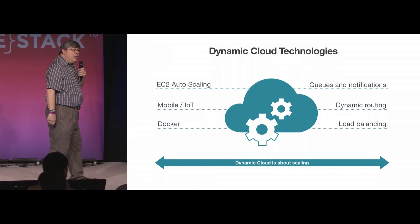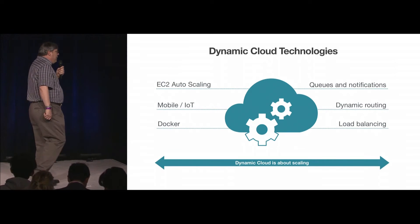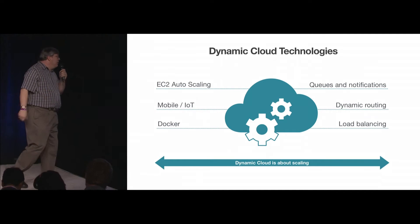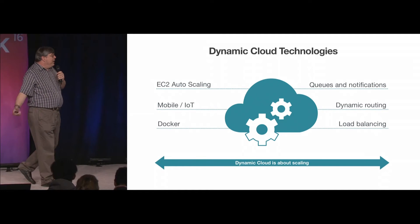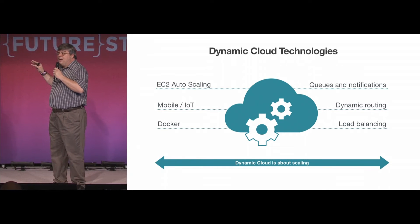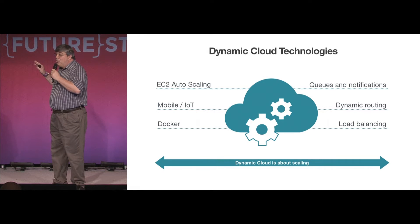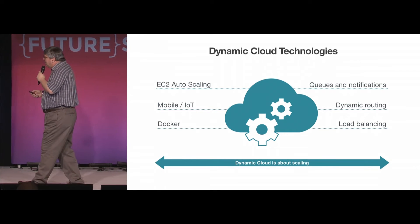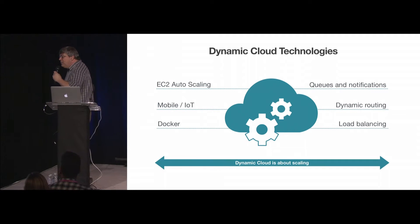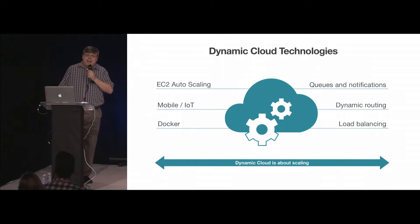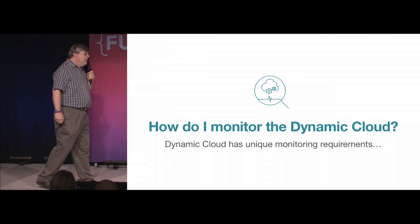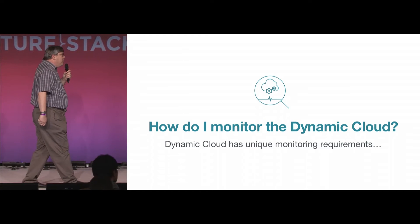It's not just Docker that does this. EC2 auto-scaling does this. A lot of the AWS mobile and IoT APIs encourage this as well — load balancing, dynamic routing capabilities, queues and notifications. How many people build AWS applications where you create and delete queues on the fly? It's becoming more and more common. Dynamic infrastructure is about scaling — building an application that uses and allocates only the resources it needs when it needs them. So how do you monitor a dynamic cloud? The answer is: very differently.